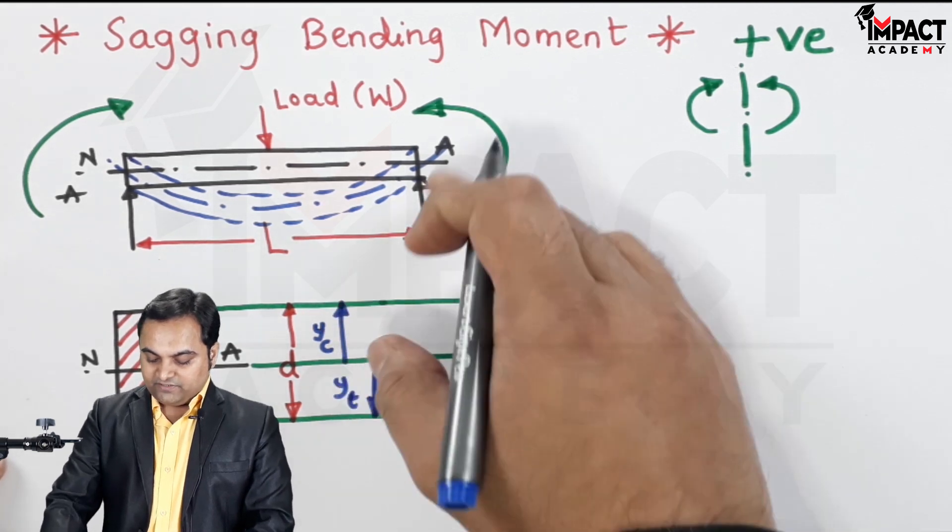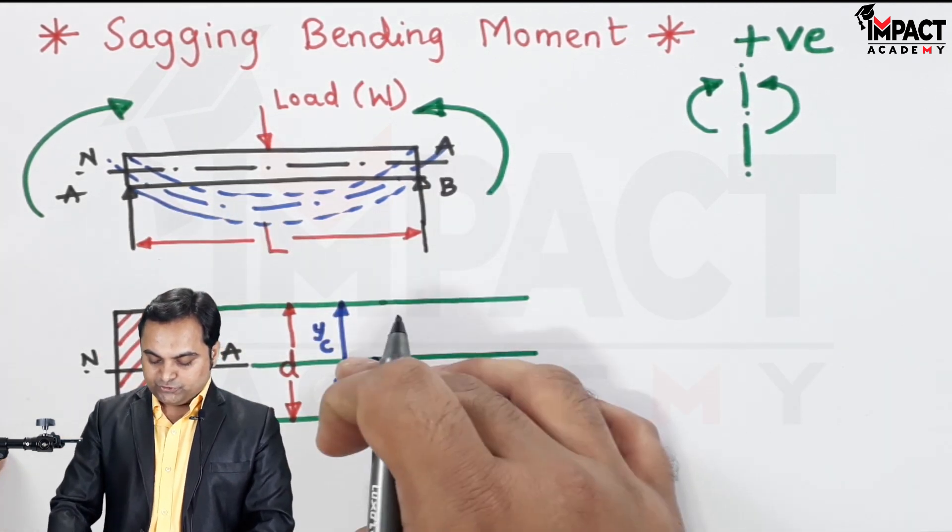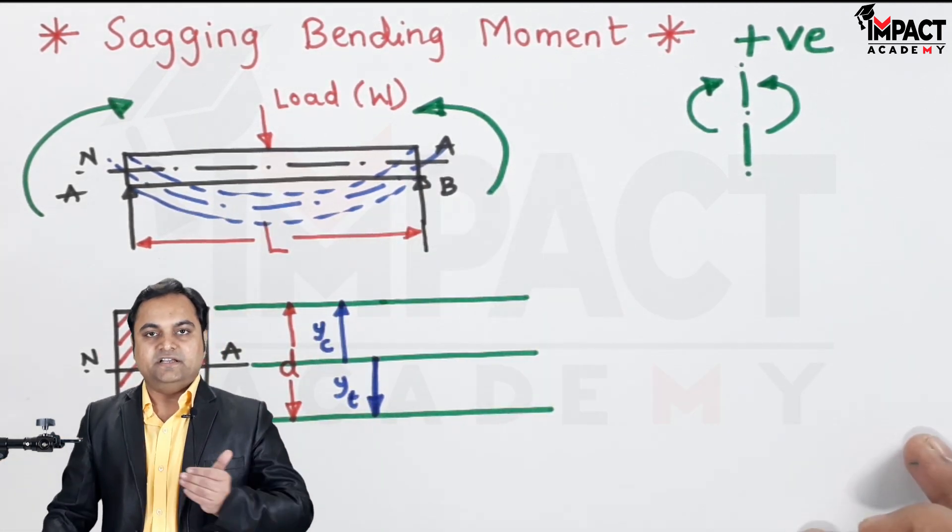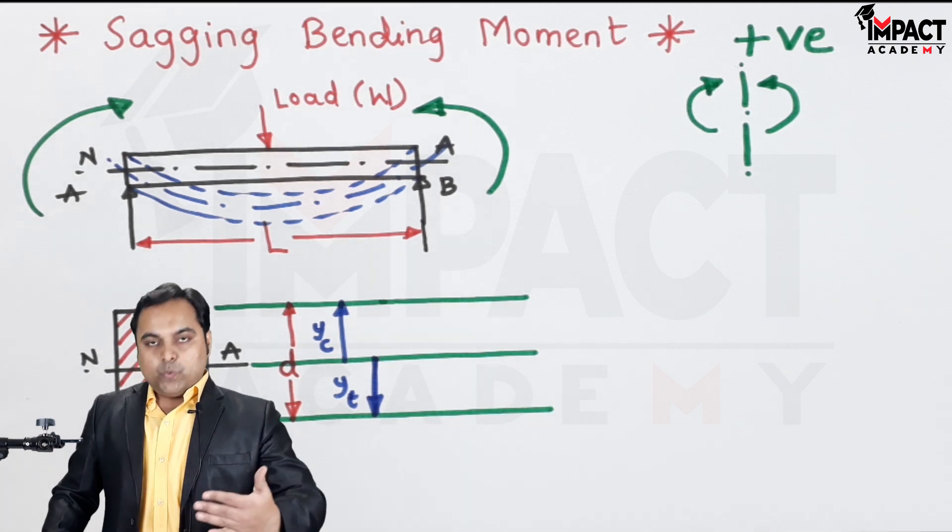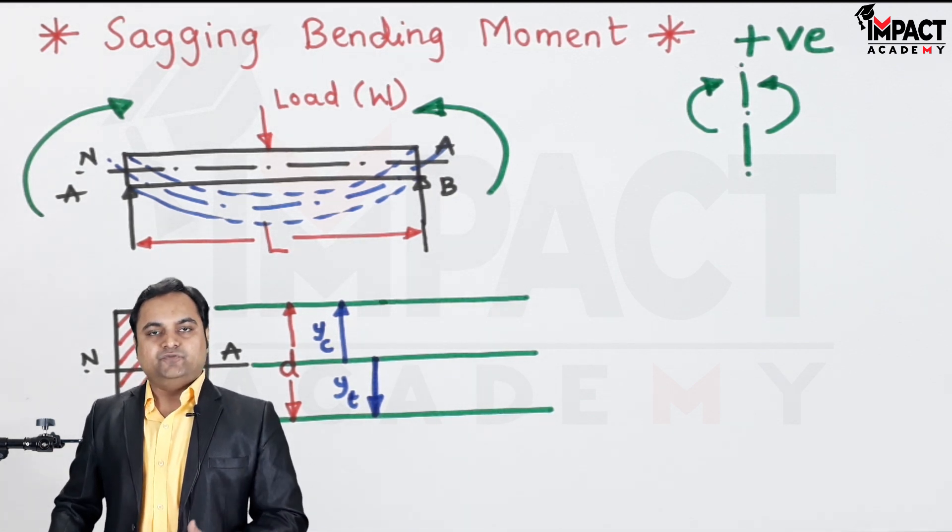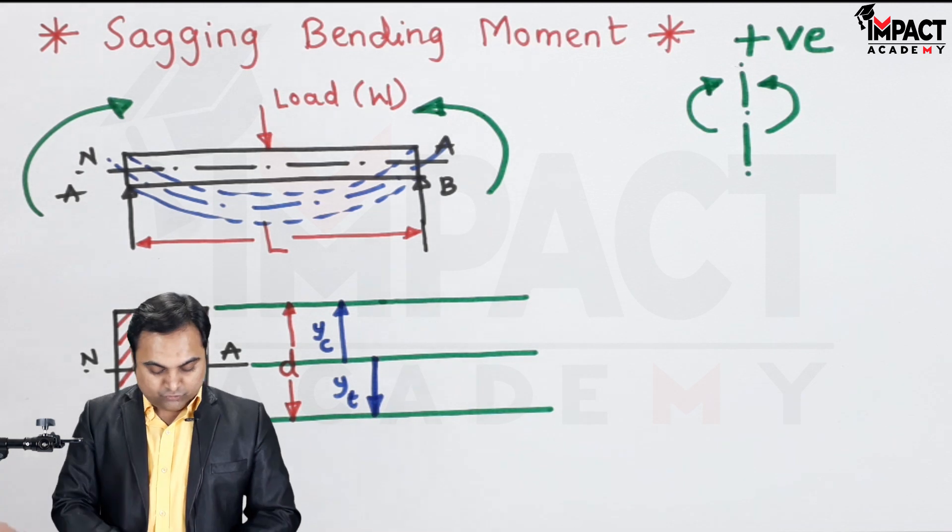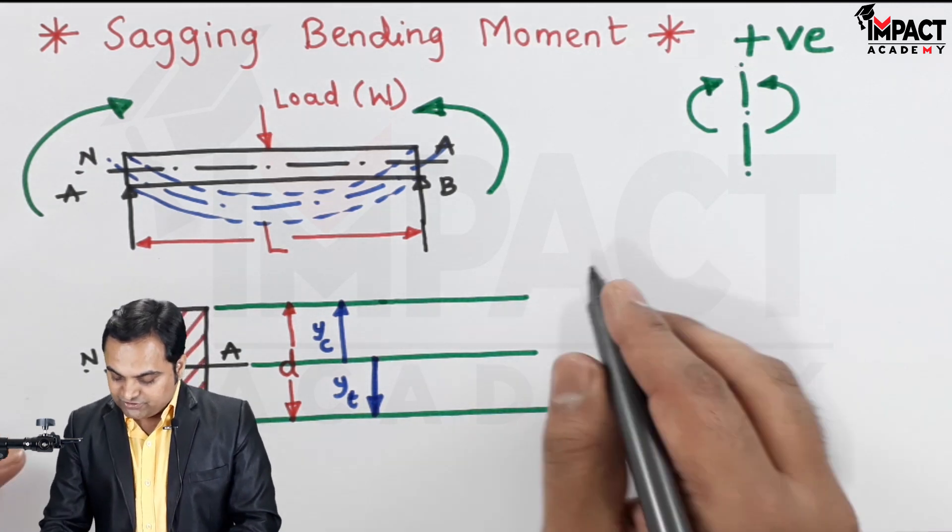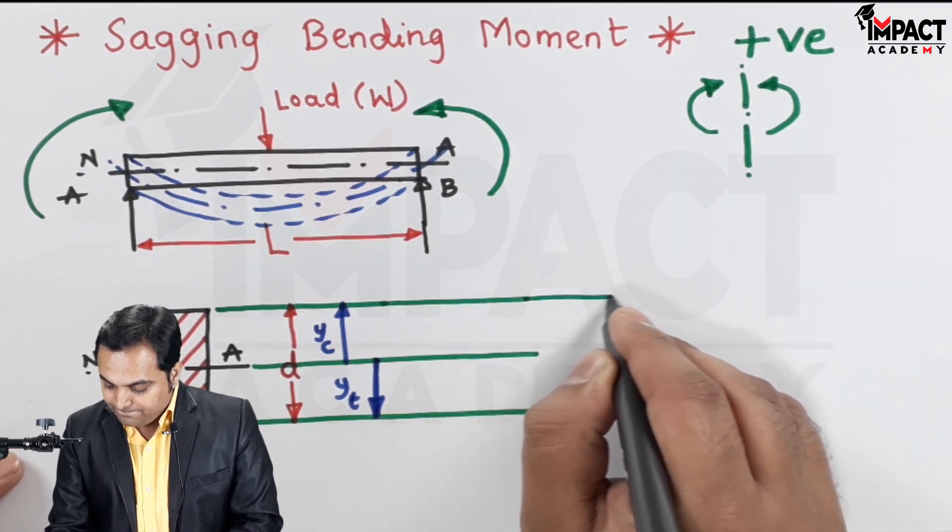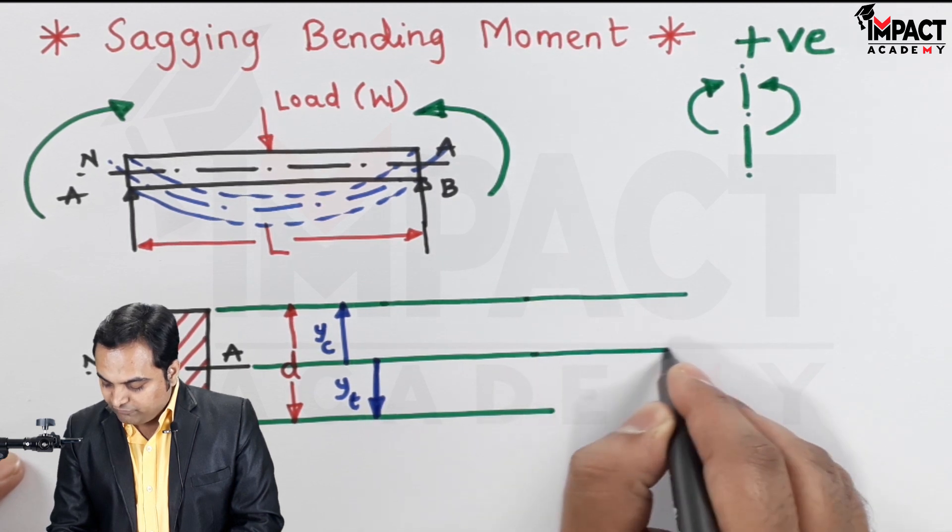And because of y_c, there would be compressive stress introduced into the above layers, that is the layers above the neutral axis, whereas the layers below the neutral axis would be subjected to tension. So for that, I am going to draw the stress distribution diagram for such a kind of bending.